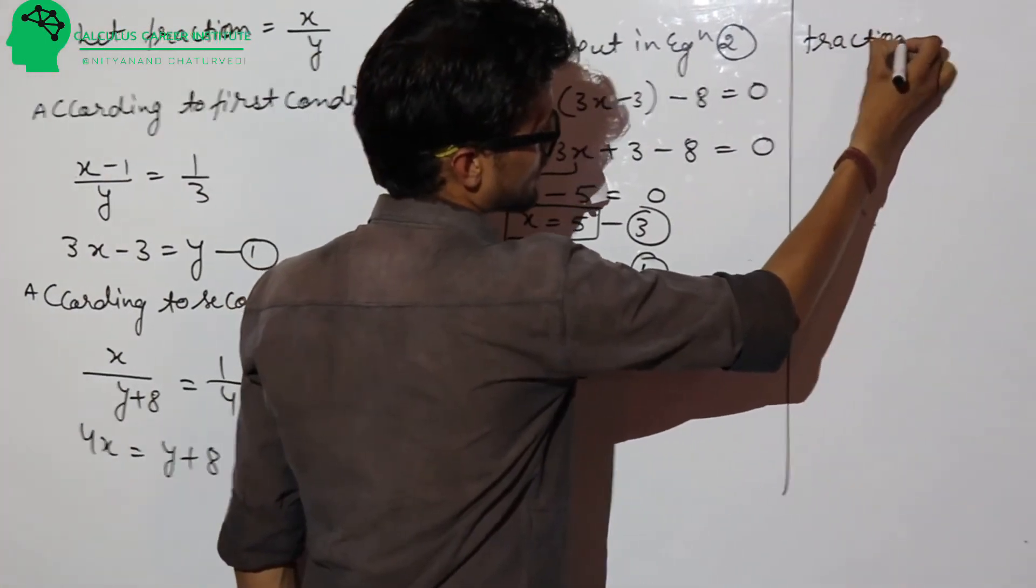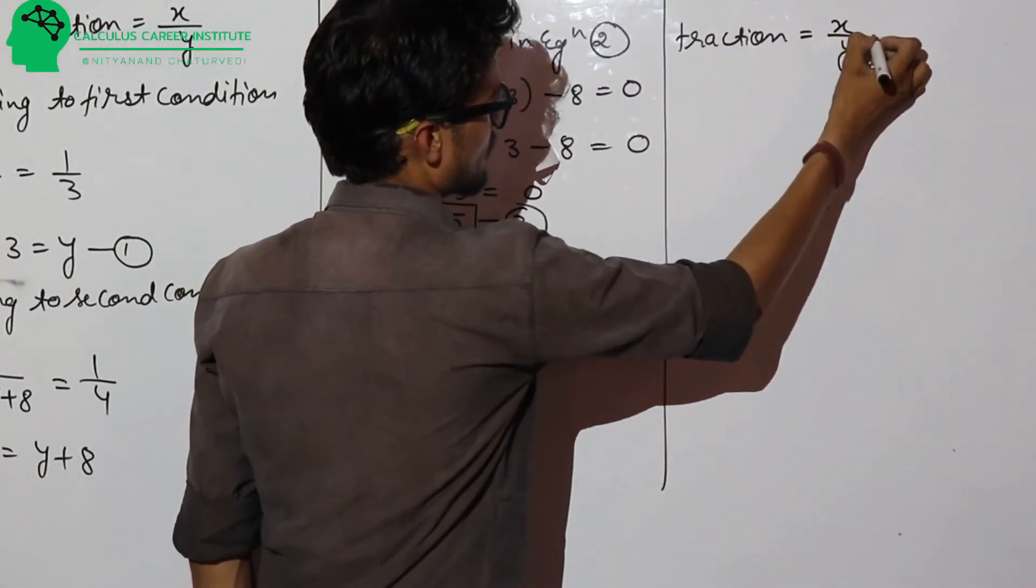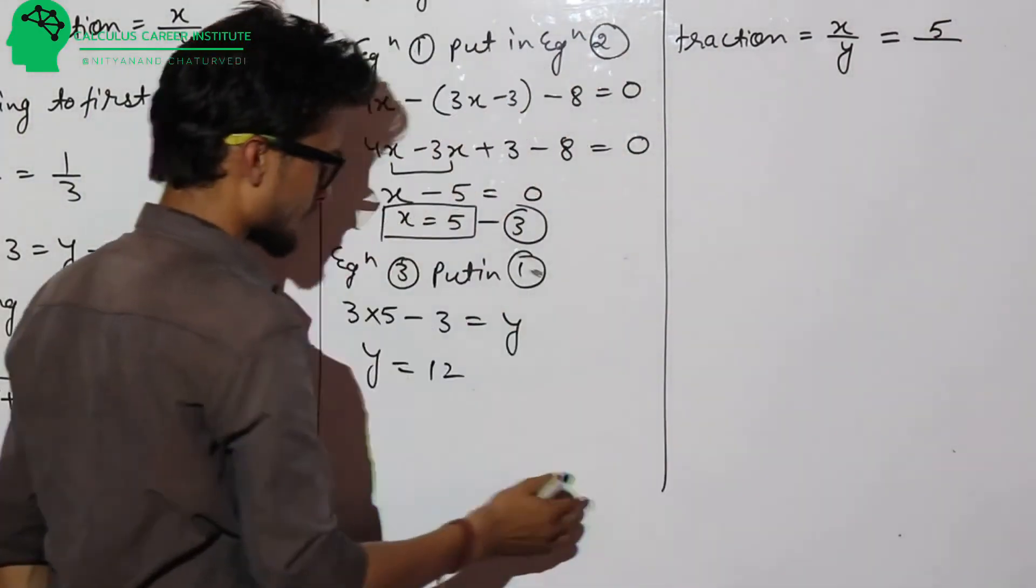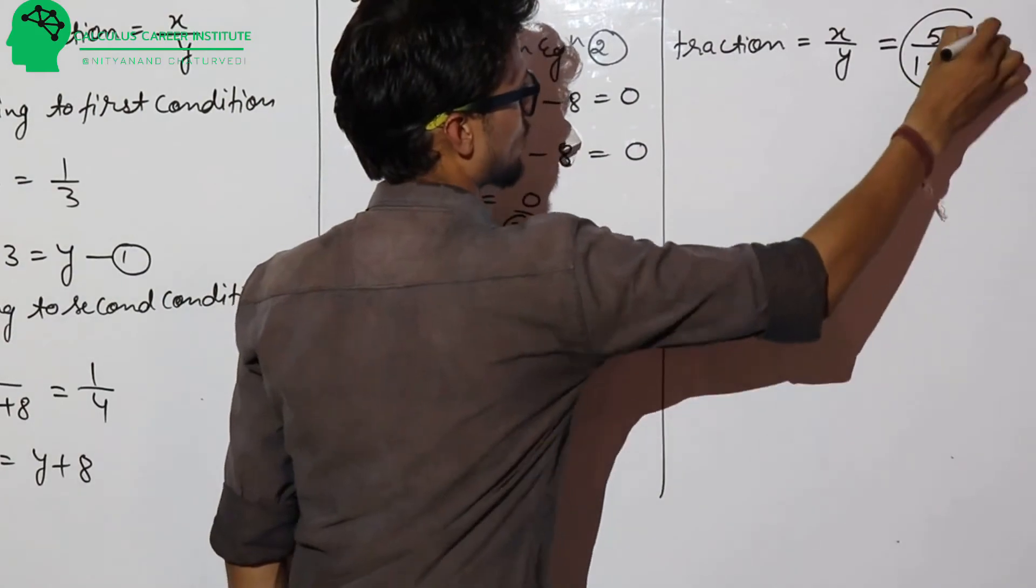we are going to get fraction equal to x upon y, and x is equal to 5, and y is equal to 12. Therefore, fraction is equal to 5 by 12.